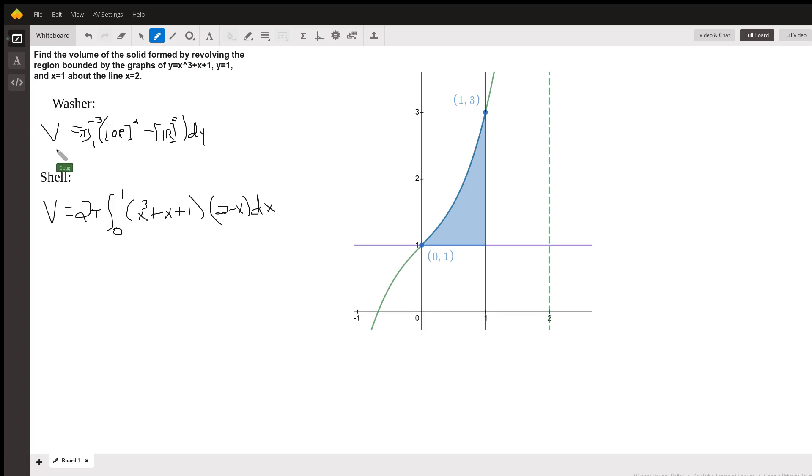Now, you could think, well, maybe I'm going to use the washer method. When you use the washer method, you think of typical rectangles or thin washers that are perpendicular to the axis of revolution.